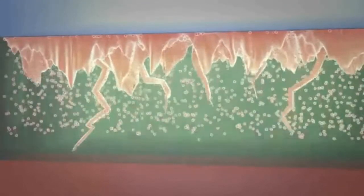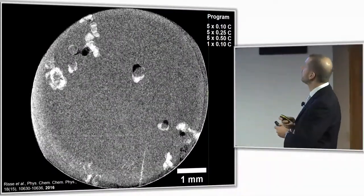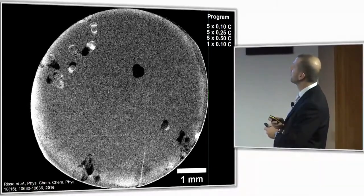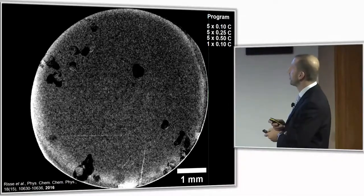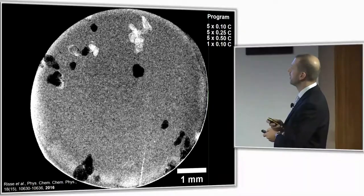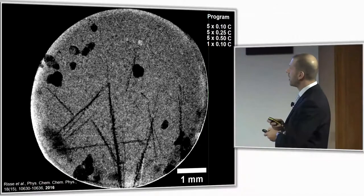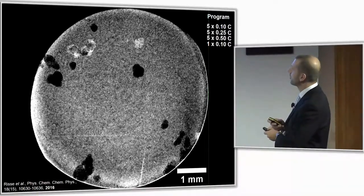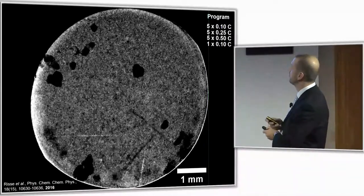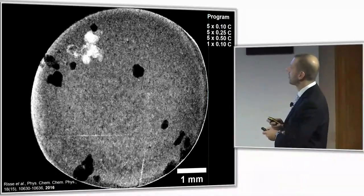Here we are — the program is running. We perform five cycles at 0.1C, five at C/4, C/2, and then one cycle at C/10. What you can see is the formation of macroscopic phases — very dark spikes and dendrites. This is beta sulfur. At the end of the discharge, which comes right now, you can see a ring forming from the outside, because here is the source of the lithium, and you see this ring formation at the end of every discharge.